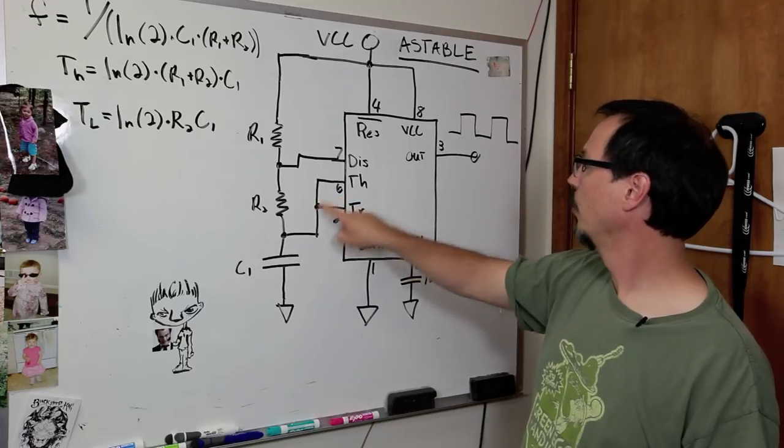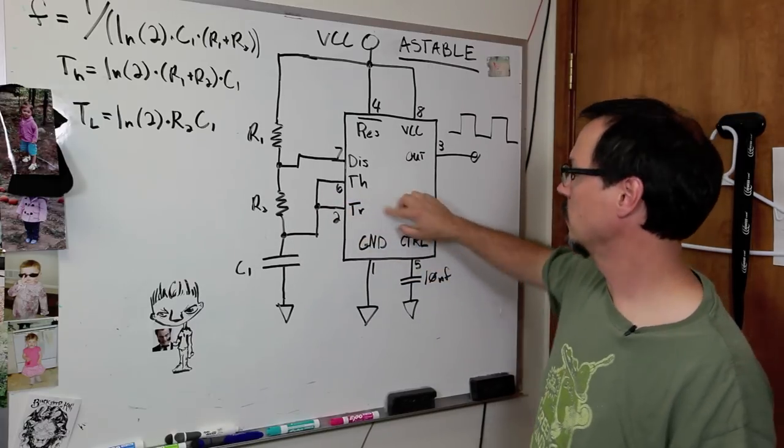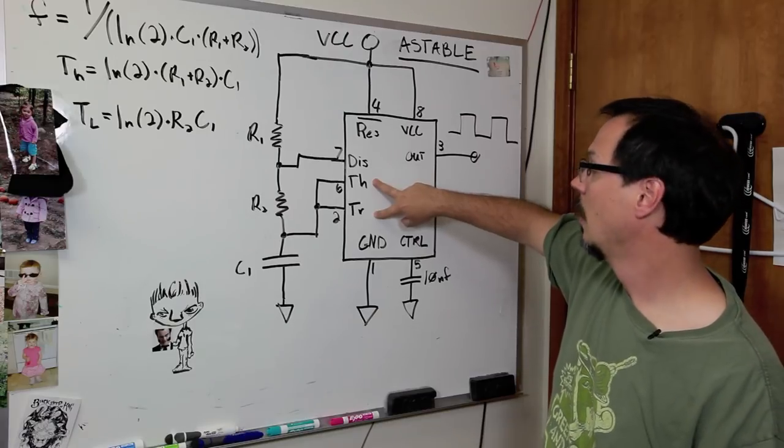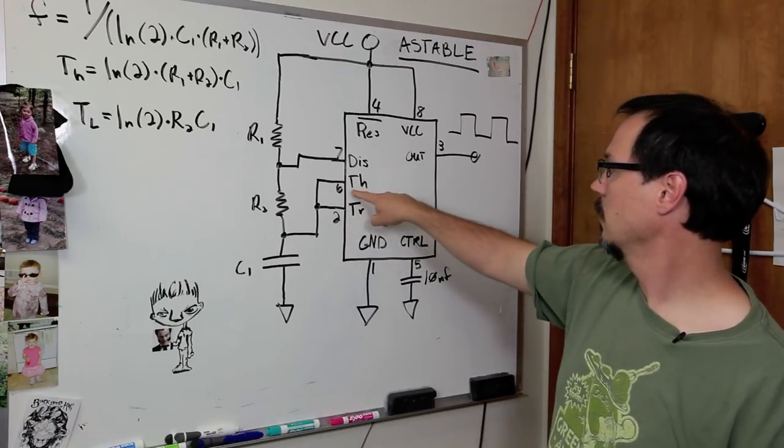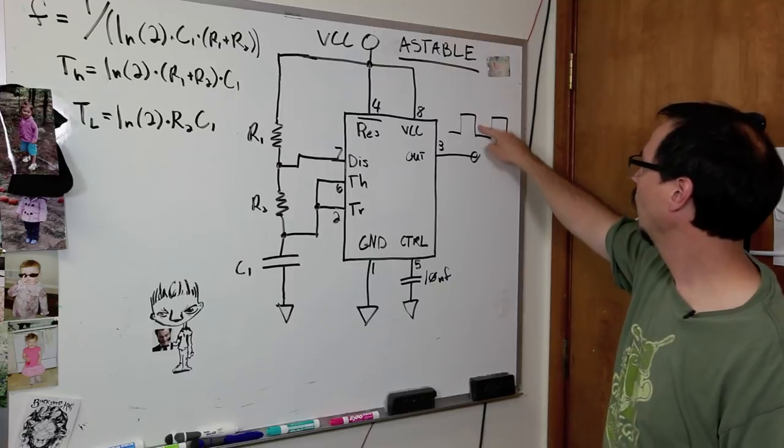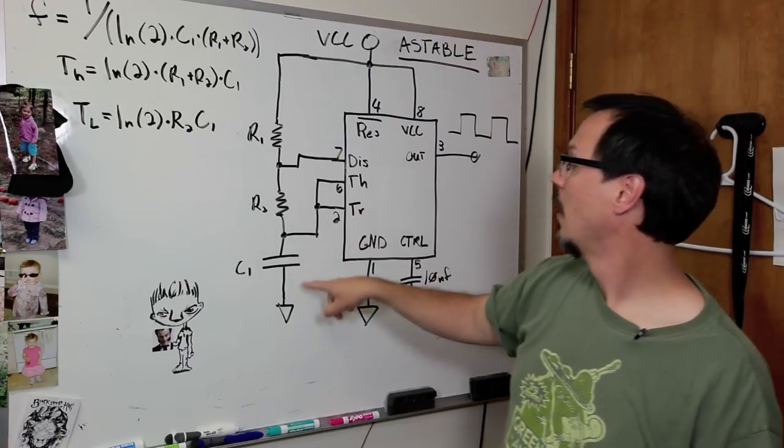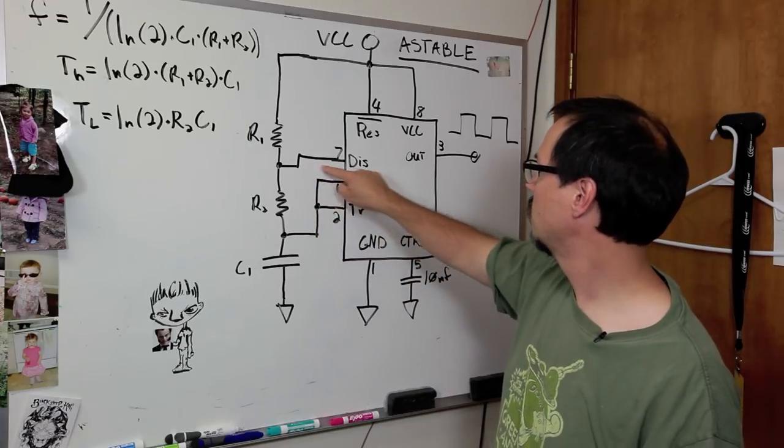Okay. Now, when the voltage on the cap reaches 2/3 VCC, and you see here trigger and threshold are tied together. When the cap reaches 2/3 VCC, the output goes low, discharge pin becomes active, and the cap discharges just through R2.